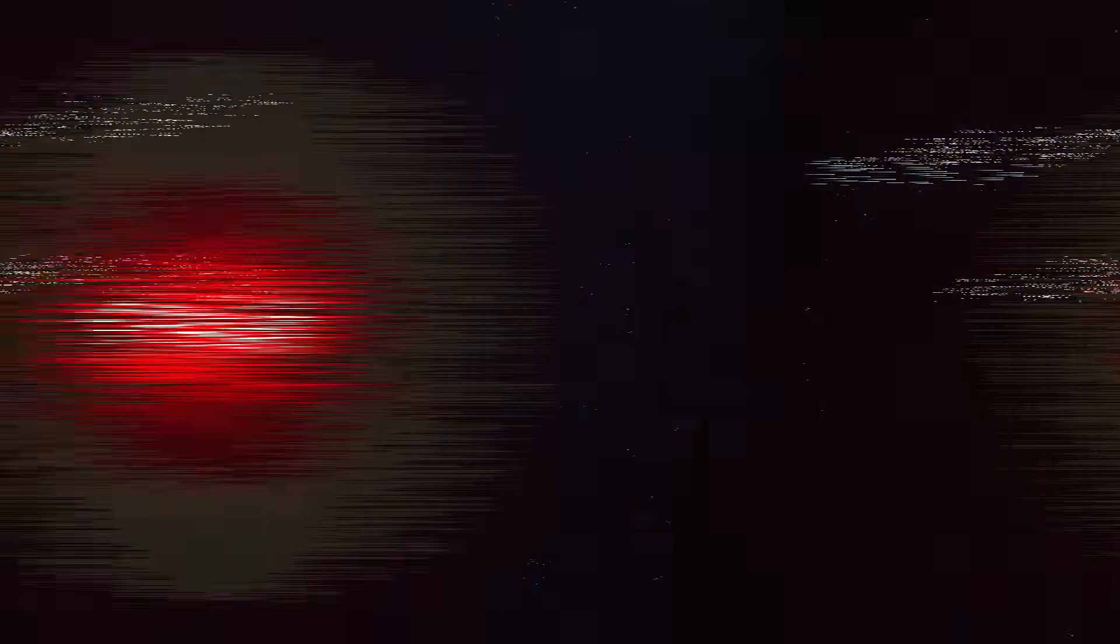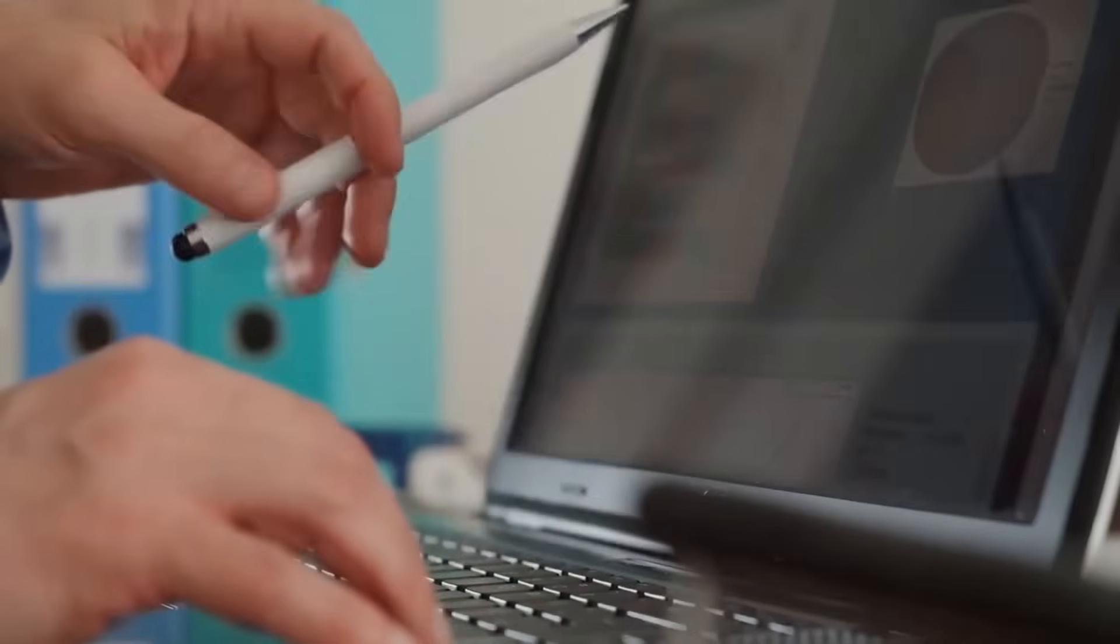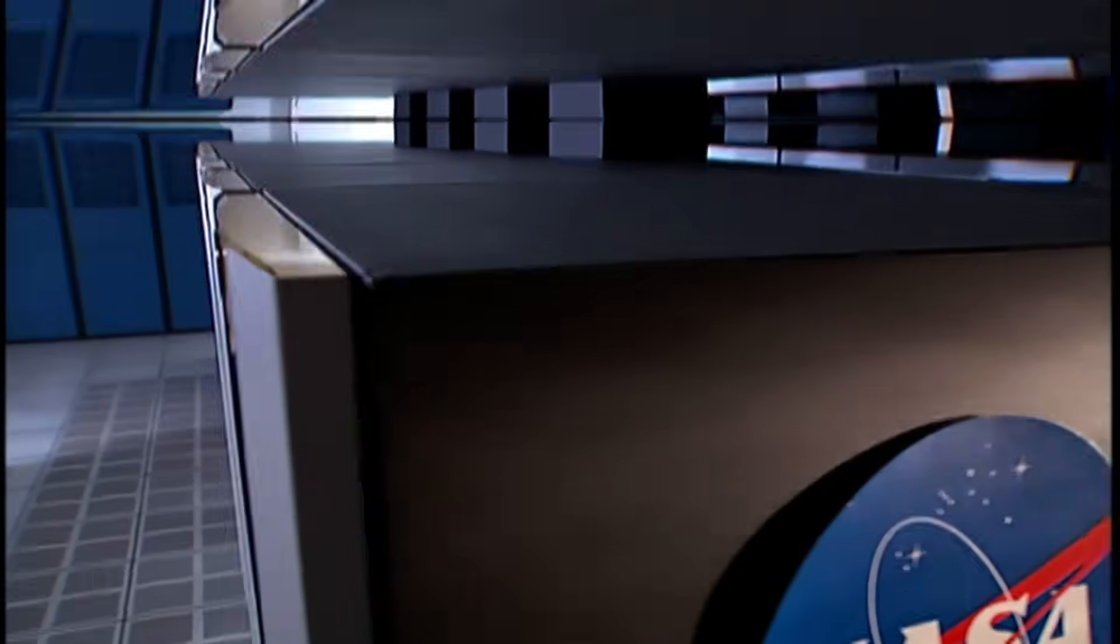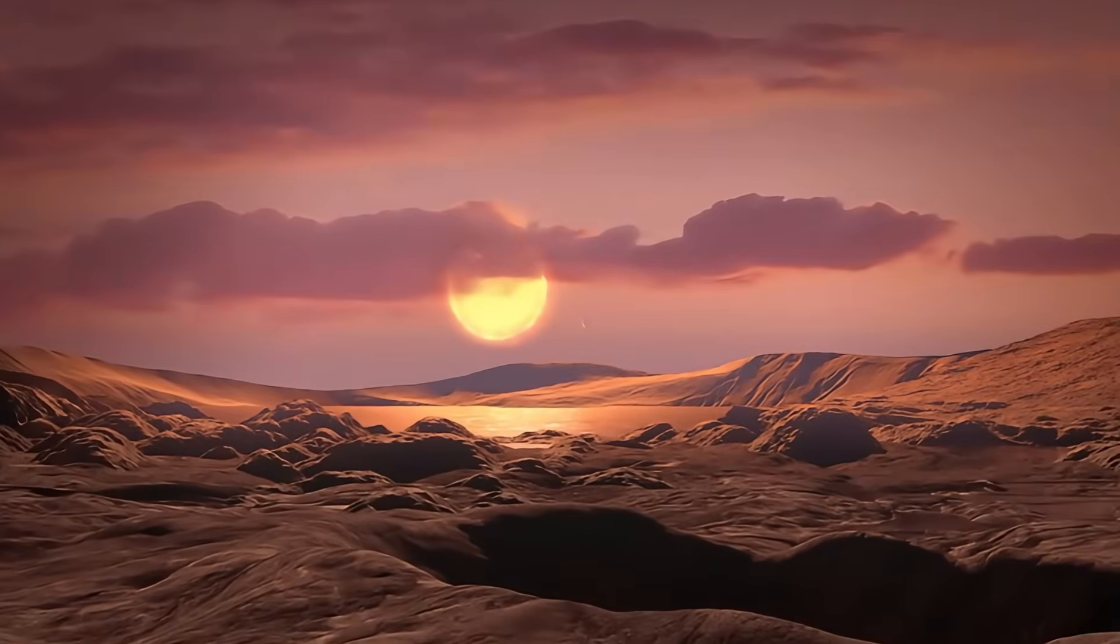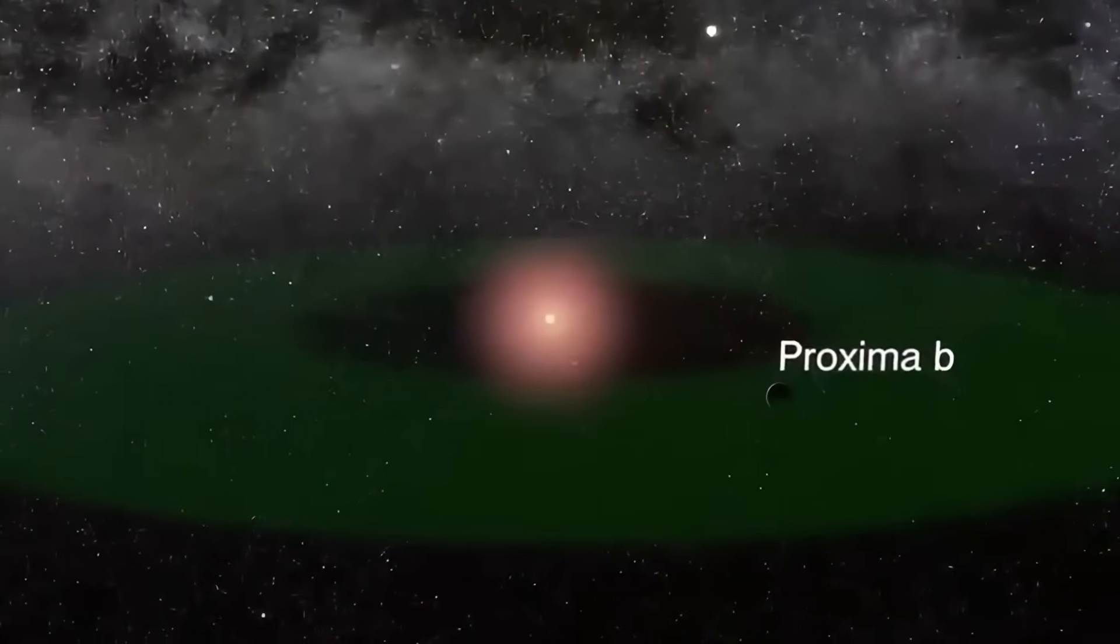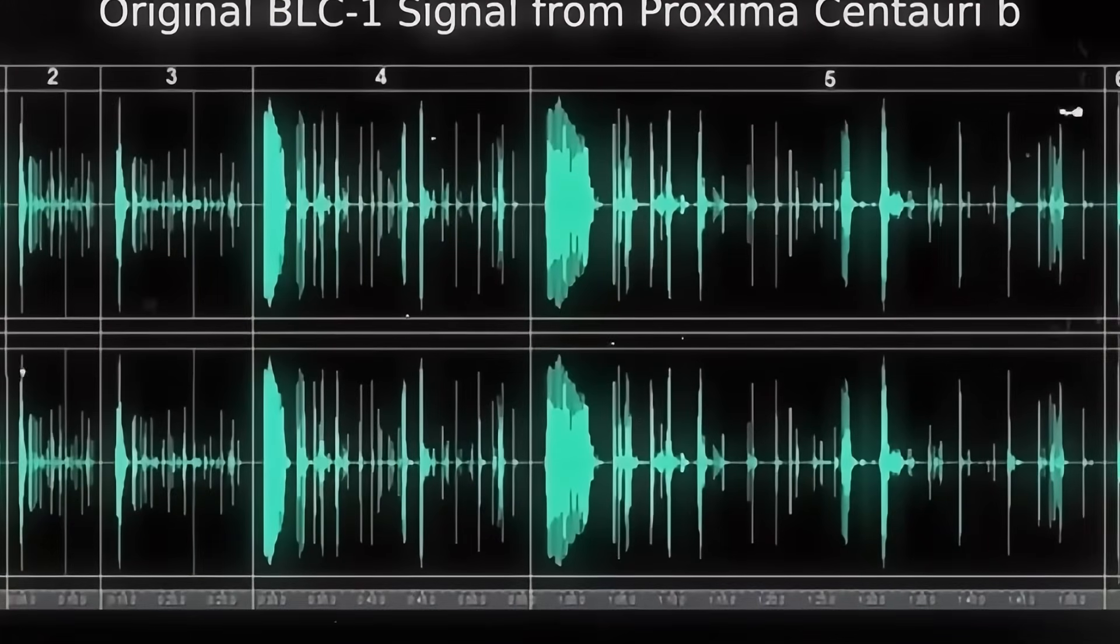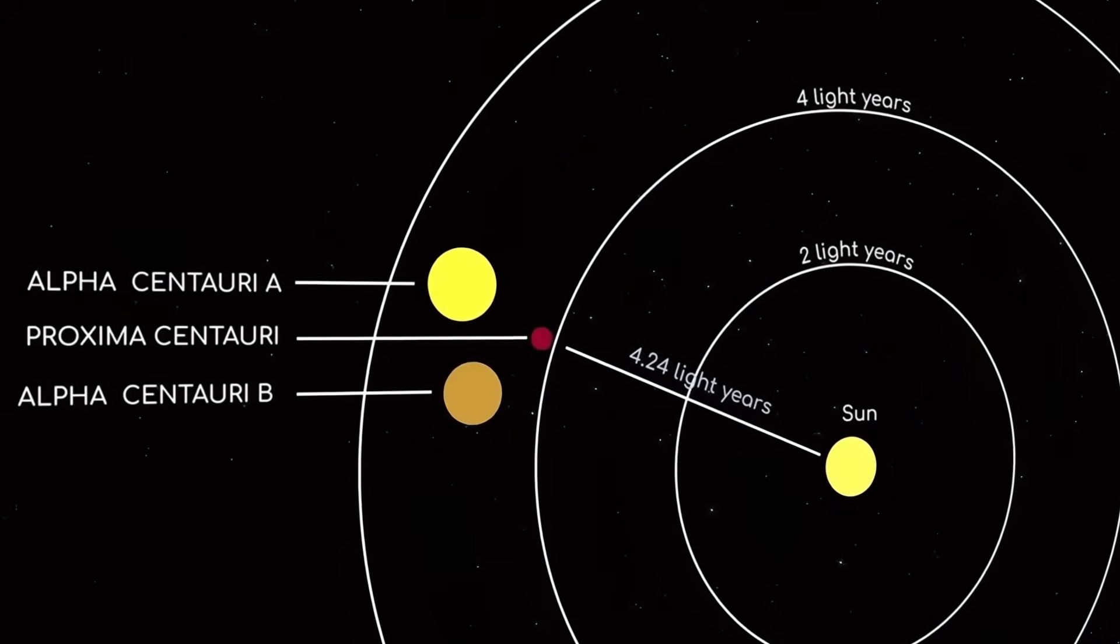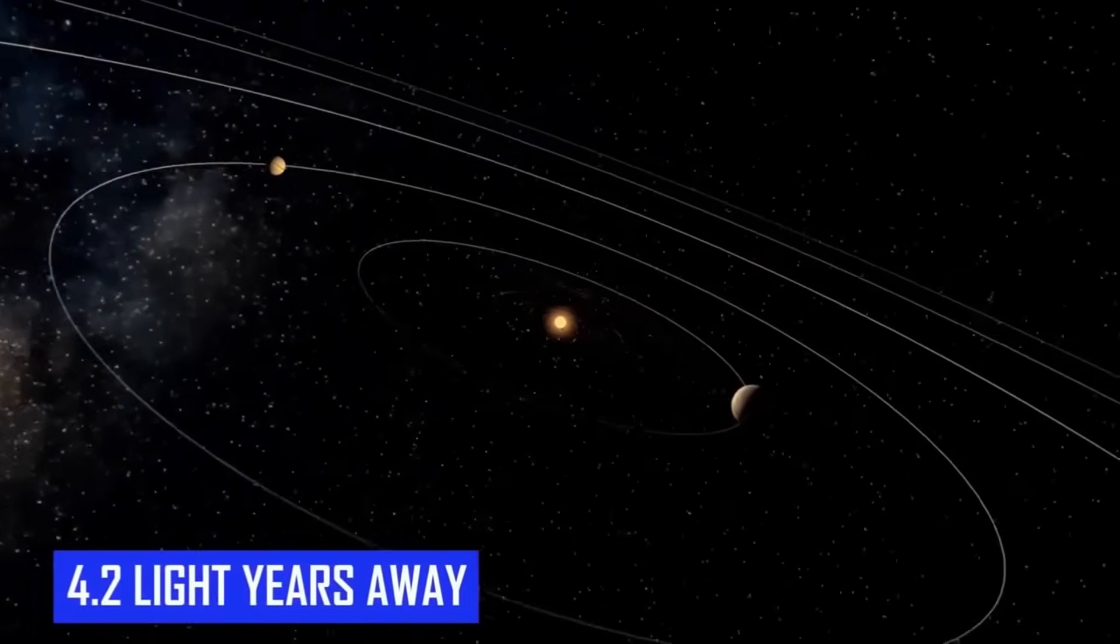The investigation continues. This is unlike anything found on other exoplanets. The strange formations on Proxima B have raised new questions, and scientists are working to find the answers. What began as routine observations has evolved into one of the most compelling mysteries in exoplanet research. These unexpected features remind us that the universe still holds countless surprises, even in our cosmic backyard. As we've explored throughout this video, the unusual reflectivity patterns, thermal anomalies, and structured formations on Proxima B defy conventional explanations. Will future observations reveal a new type of geological process? Could these features tell us something fundamental about planetary evolution around red dwarf stars? The answers to these questions could transform our understanding of worlds beyond our solar system.